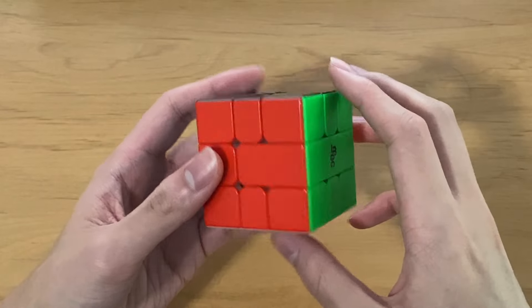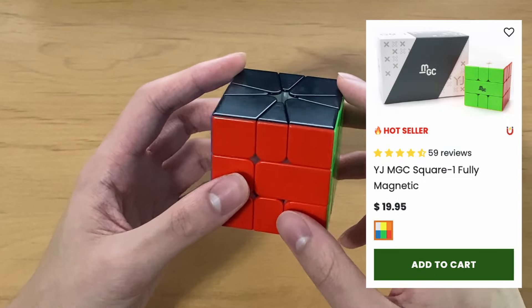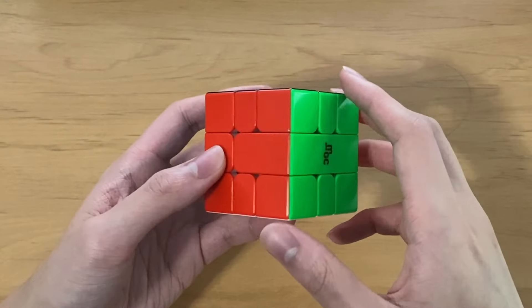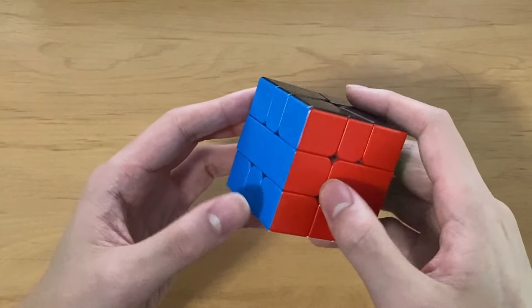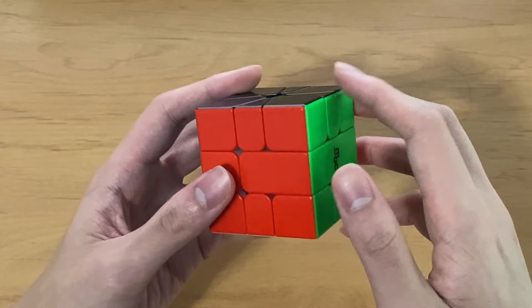For SCUBE, I use the YJMGC. Pretty much every SCUBE solver uses the SCUBE because it's the best one on the market, and there aren't really any alternatives. You could use like the Volt V2, but that one's definitely not as good as the MGC.